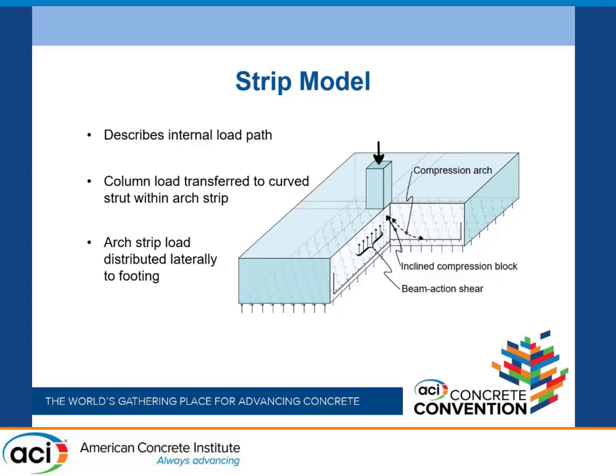In the strip model we've got an internal load path being described. We can imagine the load coming down from the column and the first thing that happens is it gets spread out. The load comes in and is carried by a curved arch and distributed into what I call arch strips on either side. These are really deep beams — short little deep beams that act as load spreaders.